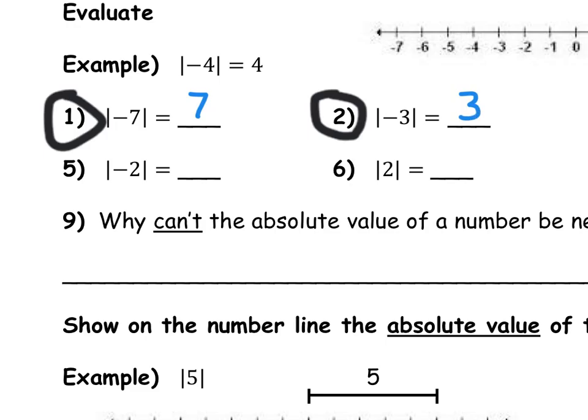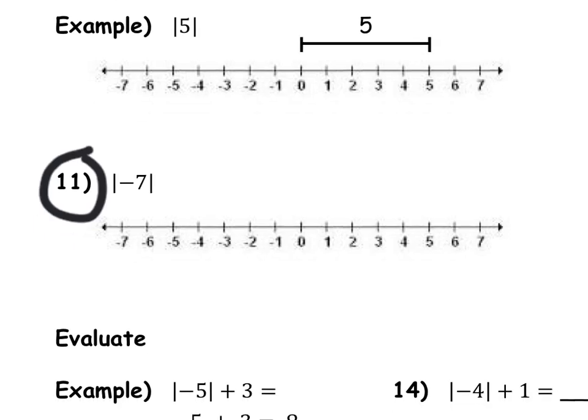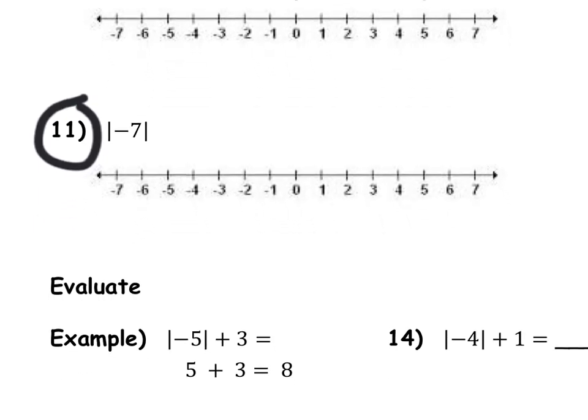Now, we can show this on a number line. Let's take a look at number 11. Here's negative 7 on the number line, and here's 0. So obviously that is 7 units left of 0. But how far away from 0 is that?